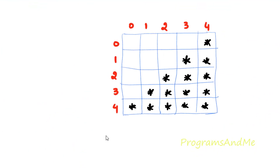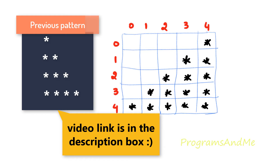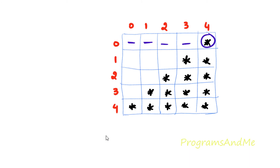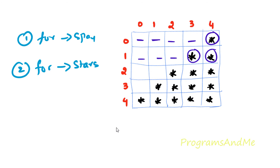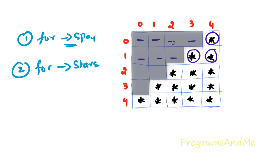Next, for the inner loop, what do we need to print? This pattern is a little bit different from previous patterns because here we need to print space first followed by a star. So in this pattern first we need to print space, after that we need to print star. That's why inside the for loop for rows we need to take two for loops — one for loop to print space and another for loop to print star. We need to take the for loop for space first.